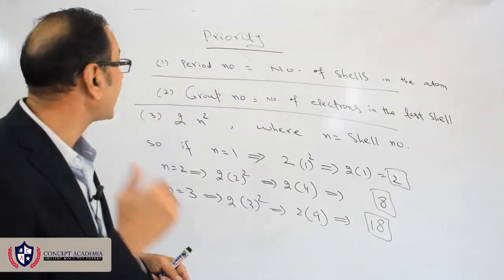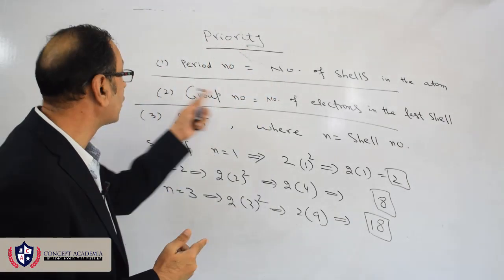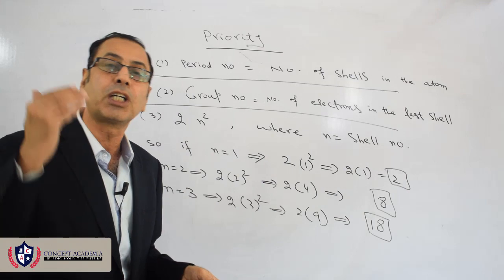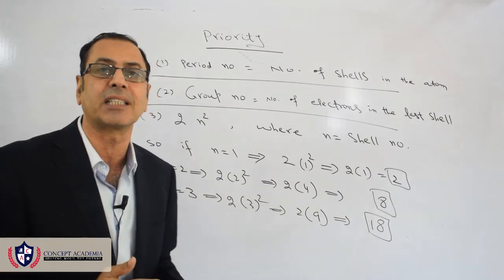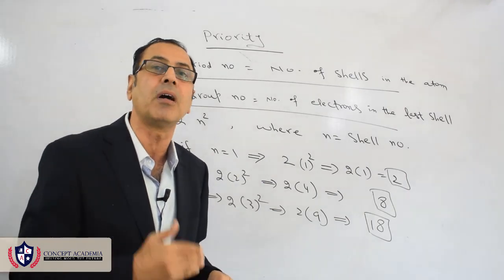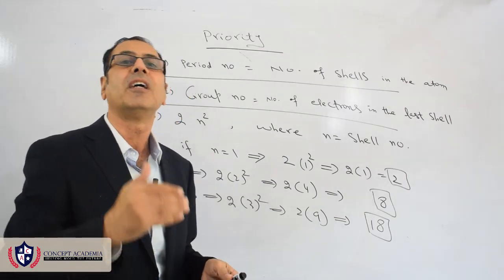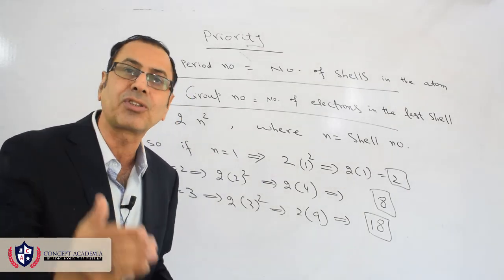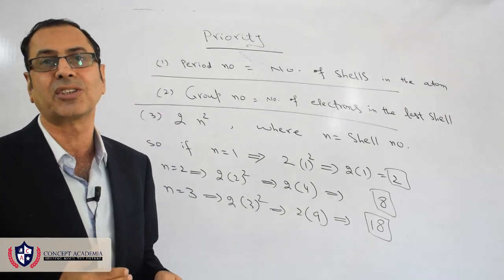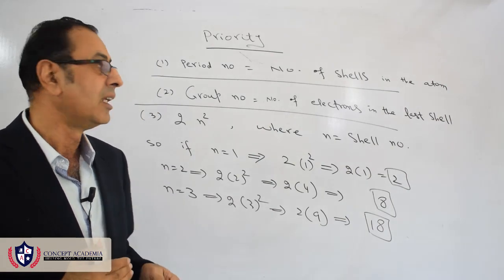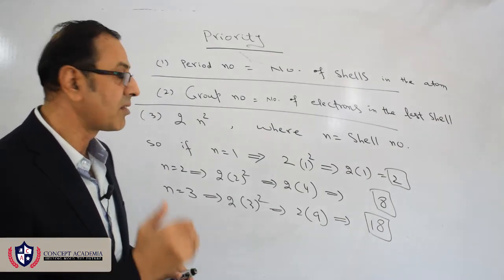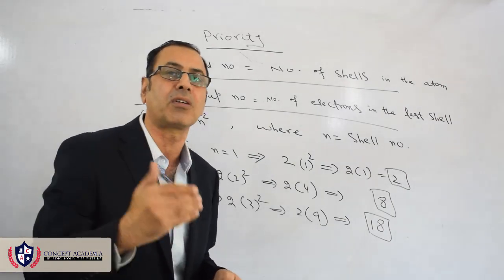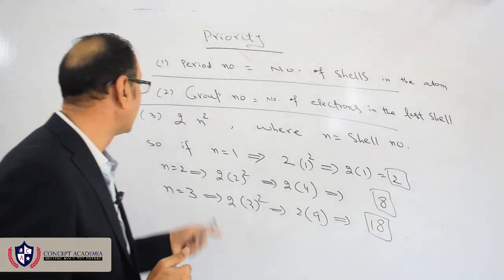Priority number two will be given to the group number. The group number tells us the number of electrons in the last shell. And the third priority will be given to the rule 2n².